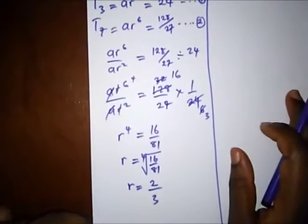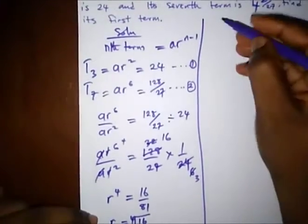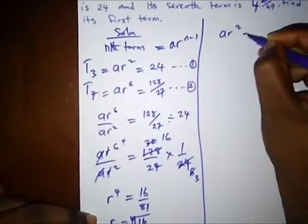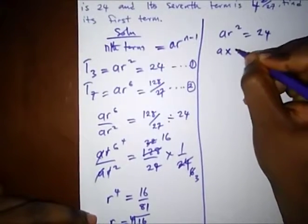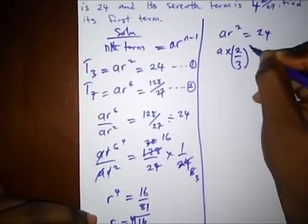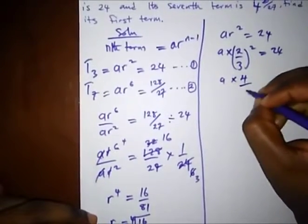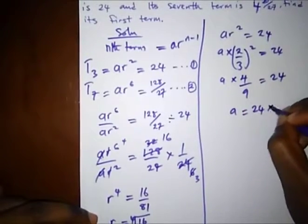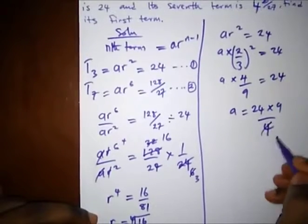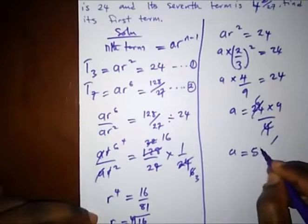And the question says, find the first term. Since we already know r, let's just slot it into either one of these equations. So let's pick equation 1. So we have ar² equal to 24. We know r as 2/3. So a multiplied by (2/3)² equal to 24. So we have a times 4/9 equal to 24. So a is equal to 24 times 9 over 4. So a is equal to 6 times 9 is 54.